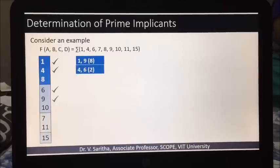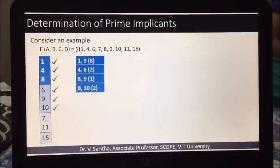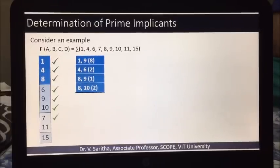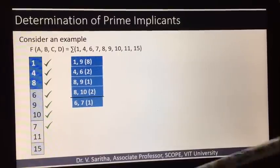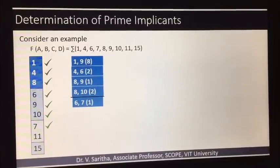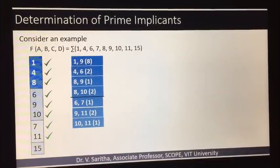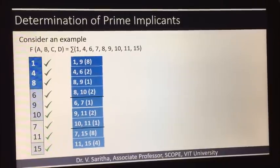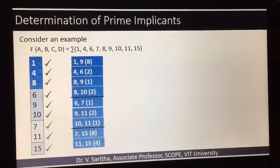Completing the comparisons between the first two groups: (4, 6) with difference 2, (8, 9) with difference 1, and (8, 10) with difference 2. Then comparing the second and third groups: (6, 7) with difference 1; 9 and 7 give difference minus 2, so not considered; 6 and 11 give difference 5, not a power of 2; (9, 11) with difference 2; and (10, 11) with difference 1.